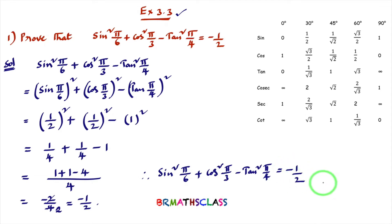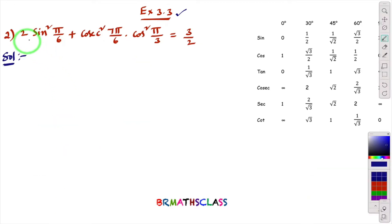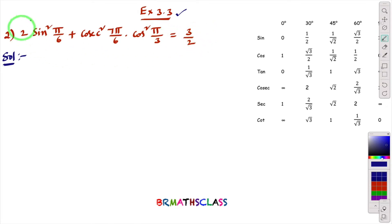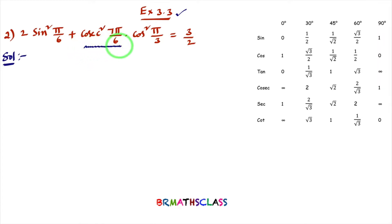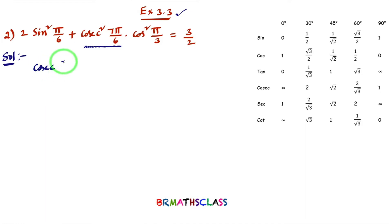Now I will do the second problem in this exercise: 2 sin²(π/6) + cosec²(7π/6) · cos²(π/3) = 3/2. We need to prove this. The value of cosec(7π/6) is not in the standard trigonometry table, so first I will calculate cosec(7π/6).